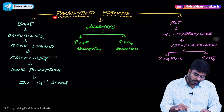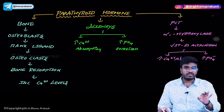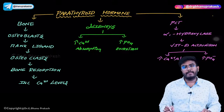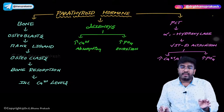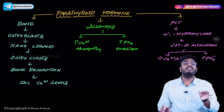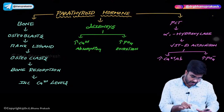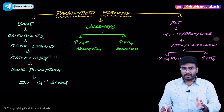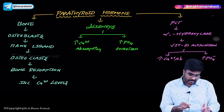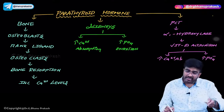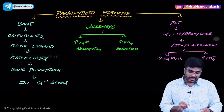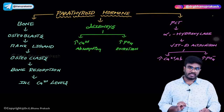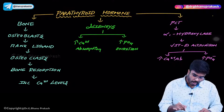So when PTH is in continuous doses, osteoblasts produce RANK ligand, which activates osteoclasts. But when PTH is released in pulsatile doses, only osteoblasts are activated in such a way that only bone formation happens. Continuous high-level doses activate osteoblasts to produce RANK ligand, activating osteoclasts, causing bone resorption and increased blood calcium levels.